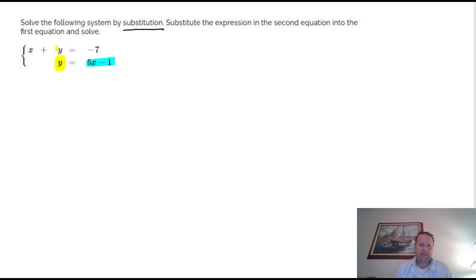So what we're going to do is since y is equal to 5x minus 1, we're going to take the y out of the first equation and we're going to substitute 5x minus 1 in its place.